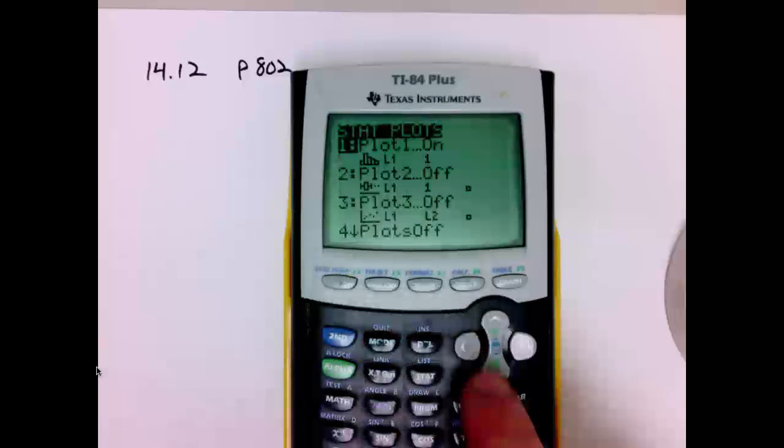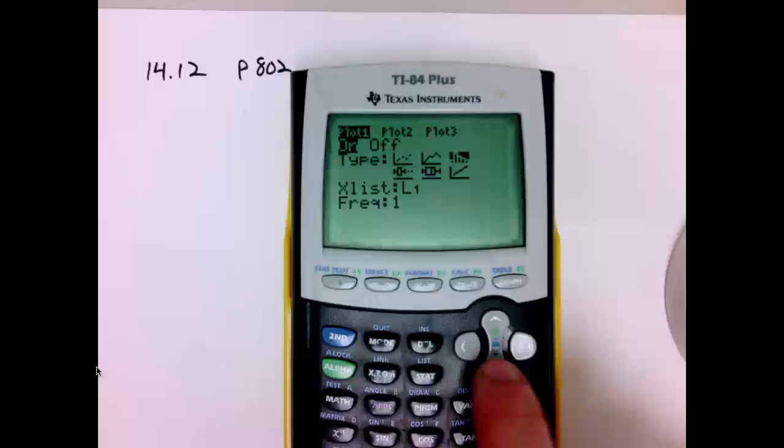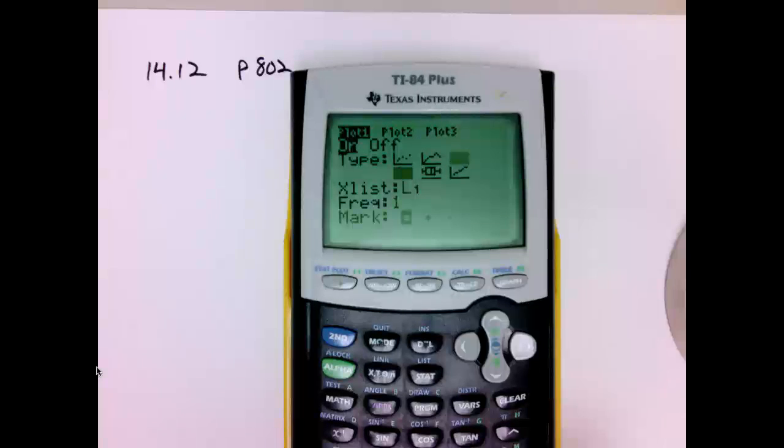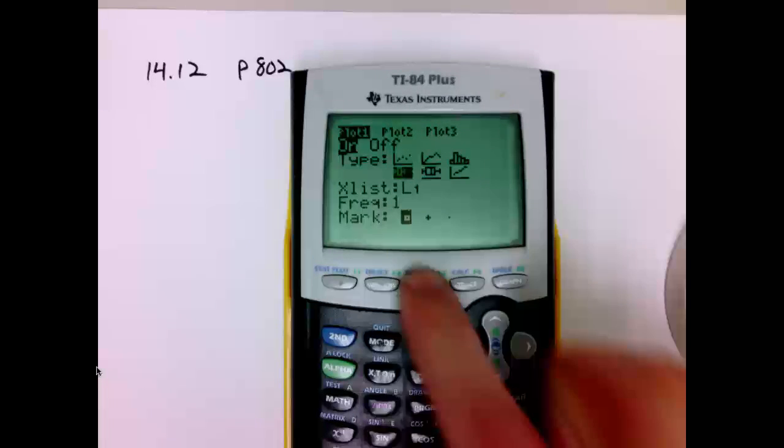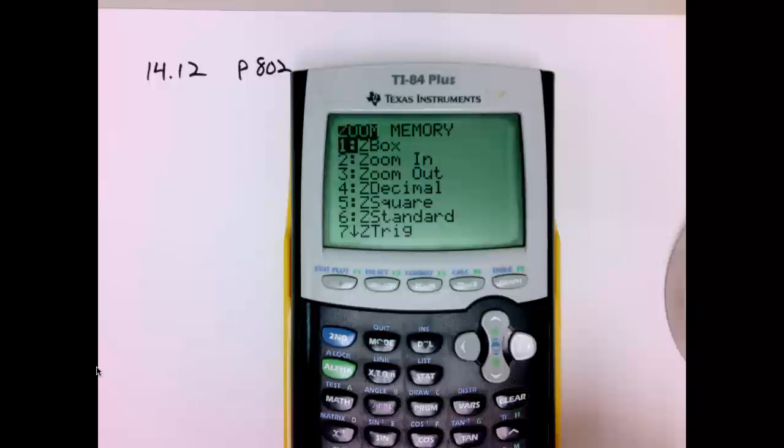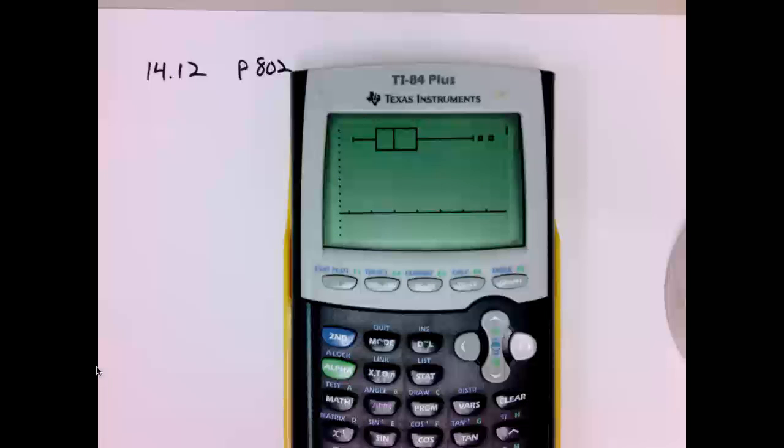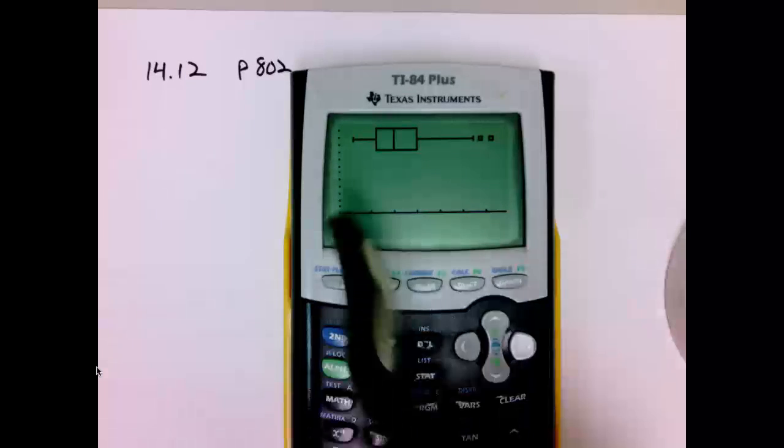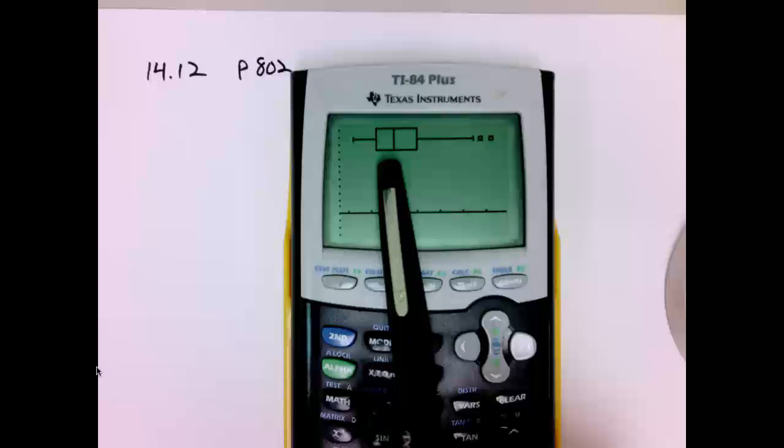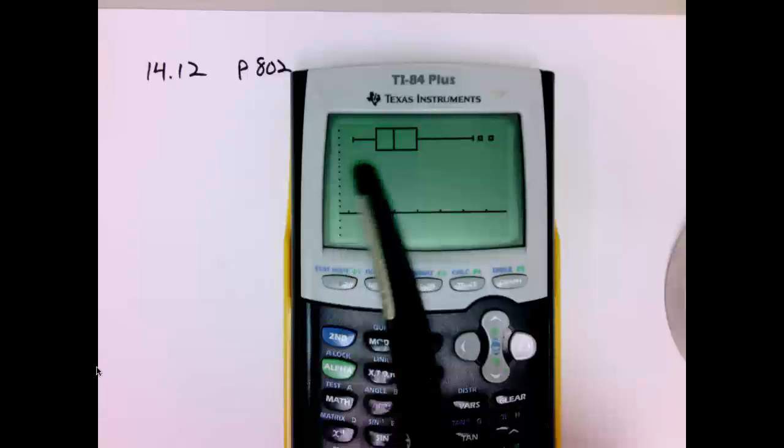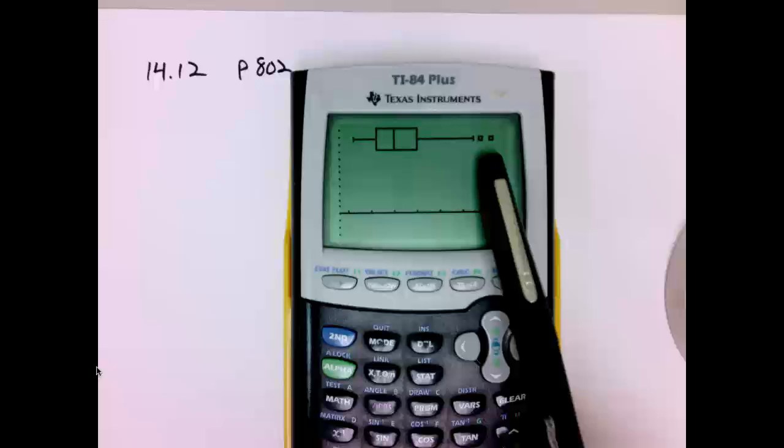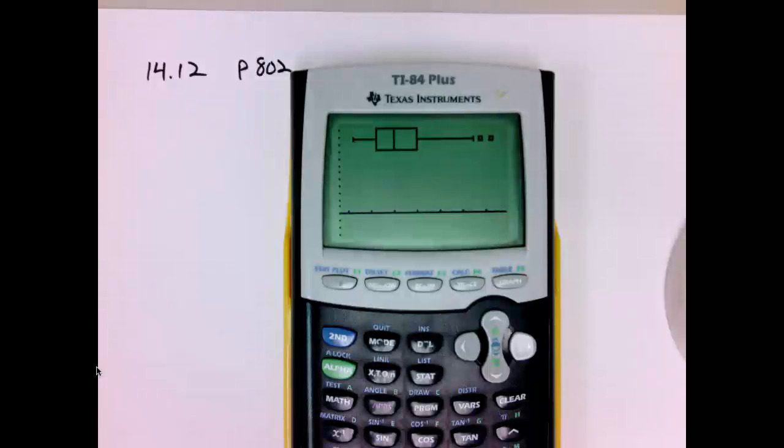Now I'm going to look at a box plot of the data. Going to select box plot, zoom nine. And there's the box plot. Also backing up the right skew, you can see that the median is much closer to the minimum value than it is to the maximum. And we have two outliers. So we have some doubts that the residuals are normally distributed.